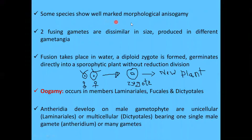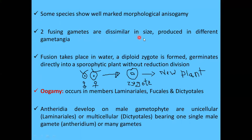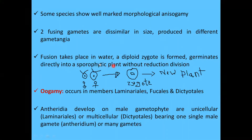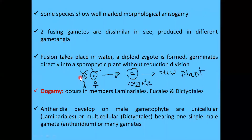Some species of brown algae show well-marked morphological anisogamy. In this type, the two fusing gametes are dissimilar in size and are produced in different gametangia. The fusion takes place in water, resulting in a diploid zygote. The male gamete is smaller and motile, while the female gamete is larger but also motile. The zygote germinates directly into a sporophytic plant without reduction division.